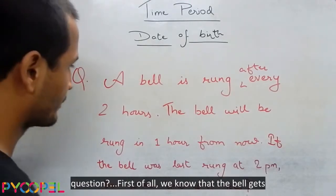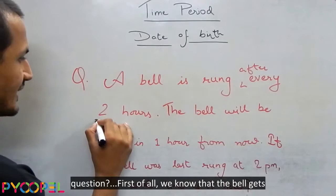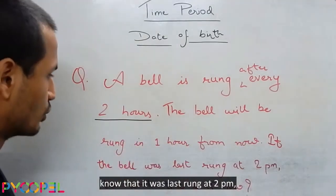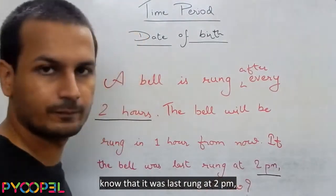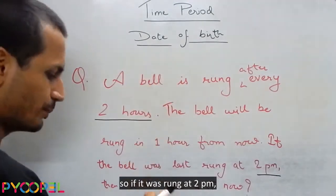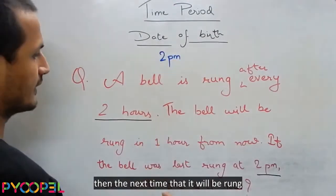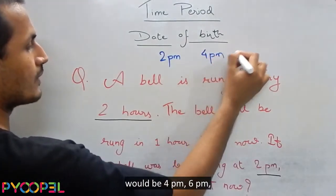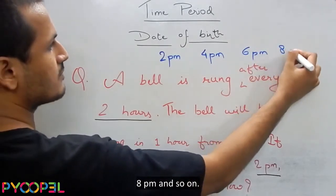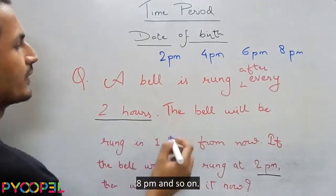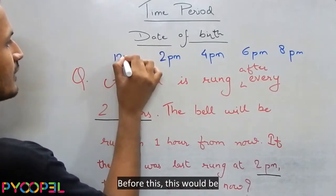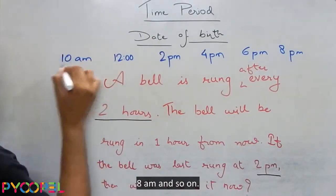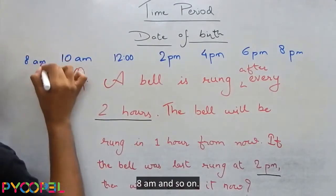How do we solve this question? We know the bell gets rung after every 2 hours, and it was last rung at 2 pm. So if it was rung at 2 pm, the next times it will be rung are 4 pm, 6 pm, 8 pm, and so on. Before 2 pm, it would have been rung at 12 noon, 10 am, 8 am, and so on.